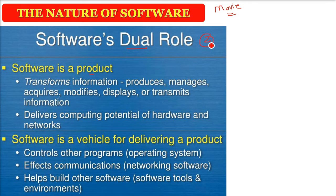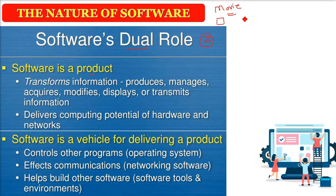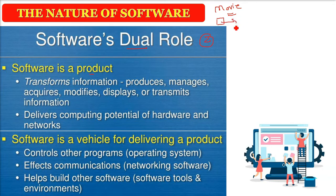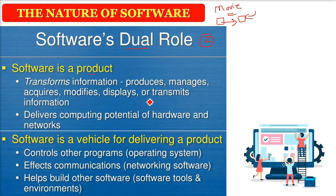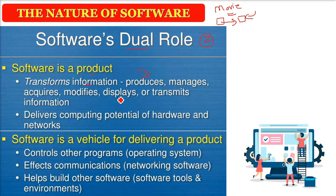The user gives some input to the software, or gets some options. He books the ticket, does the payment, and gets a ticket on his email or on WhatsApp, etc. So software is a product when it transforms information — producing, managing, acquiring, modifying, displaying, and transmitting information via different modes.